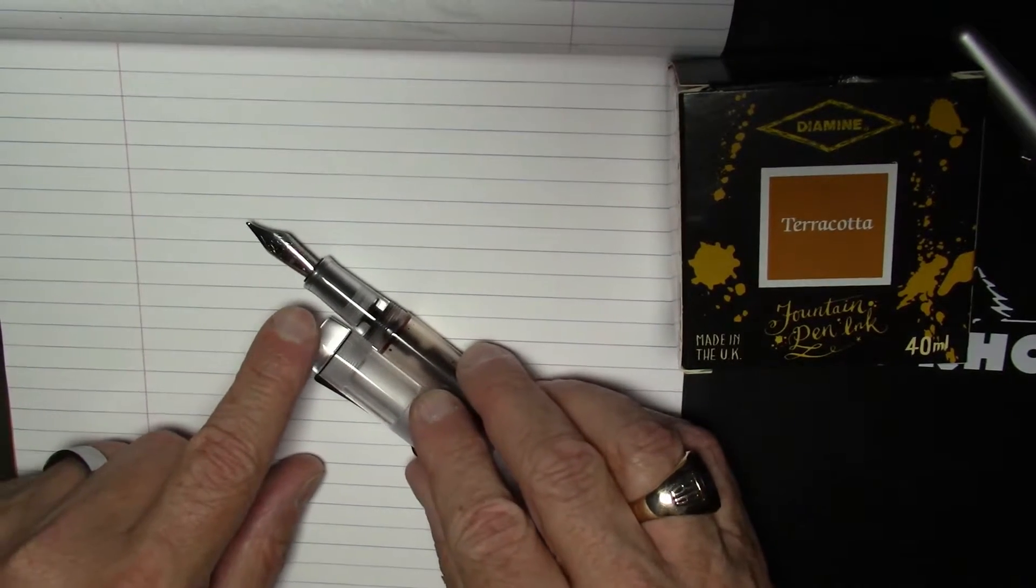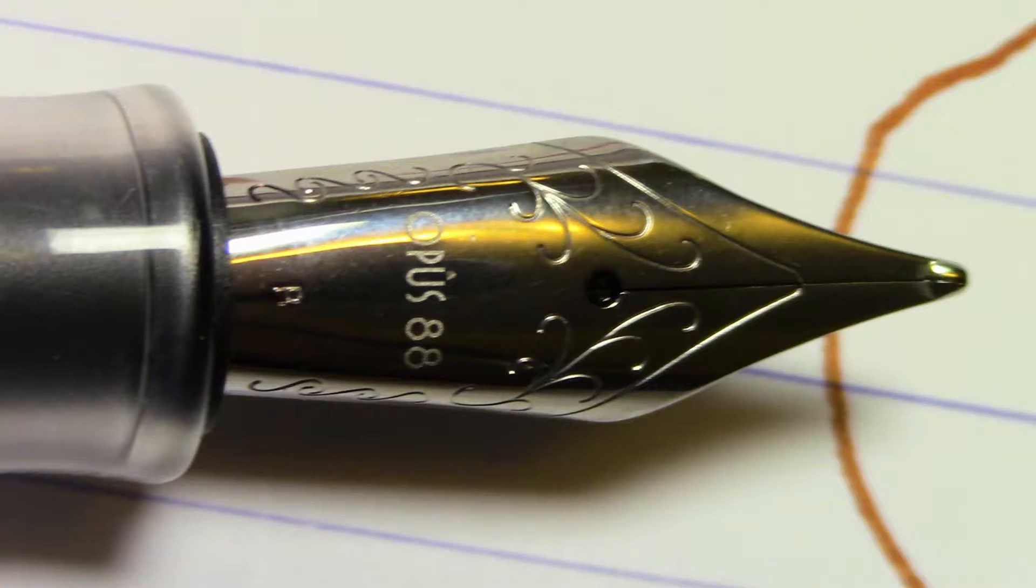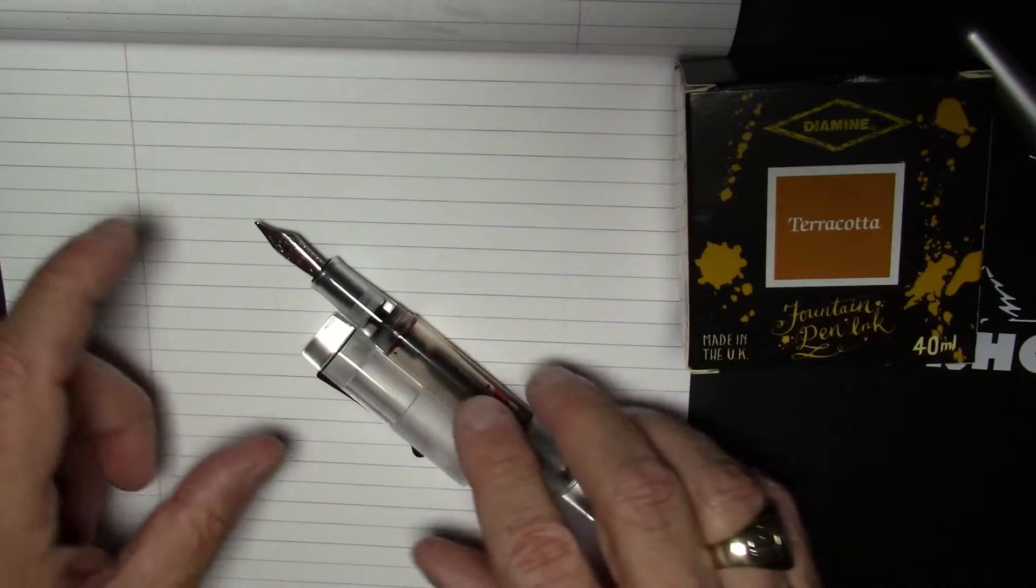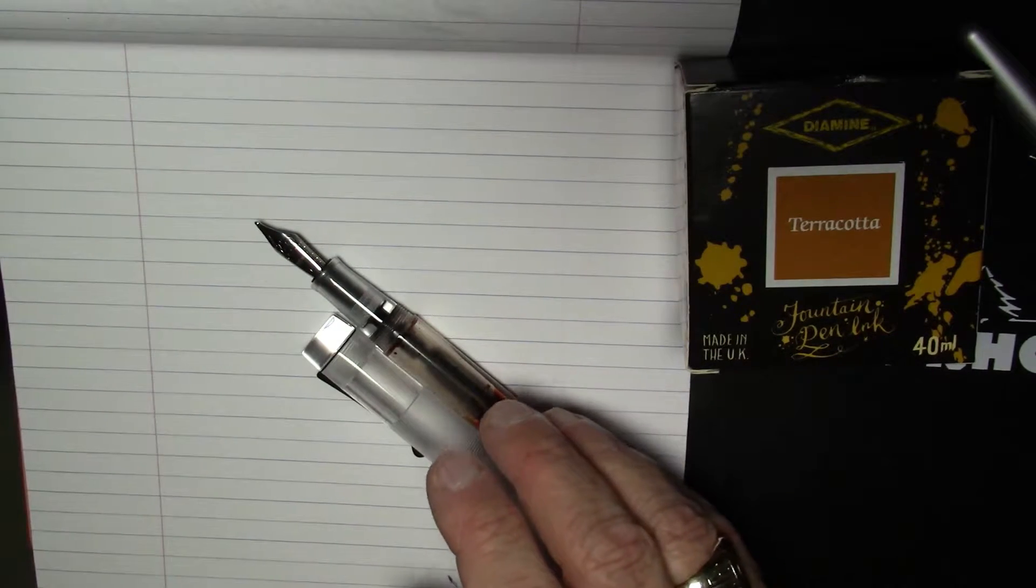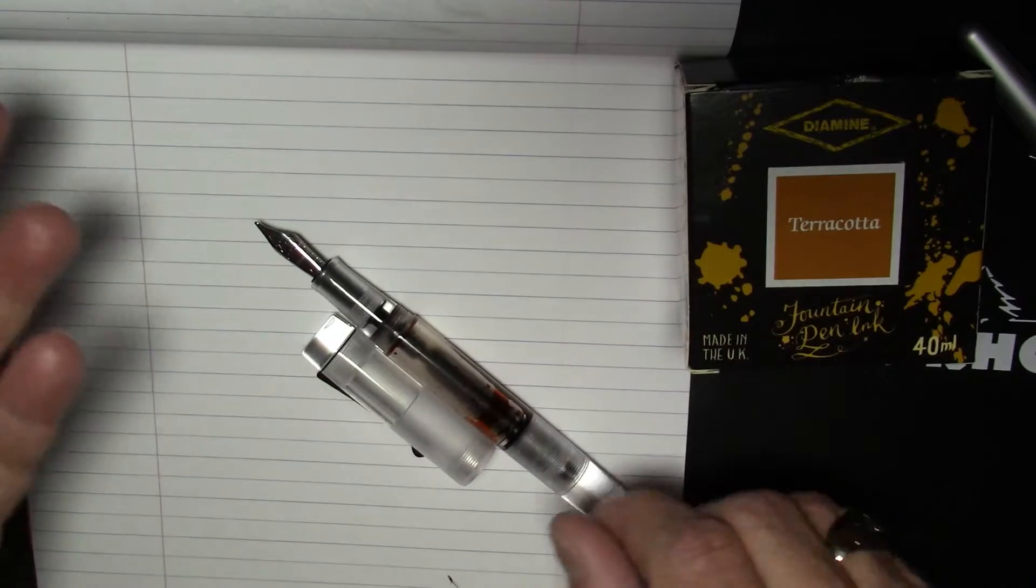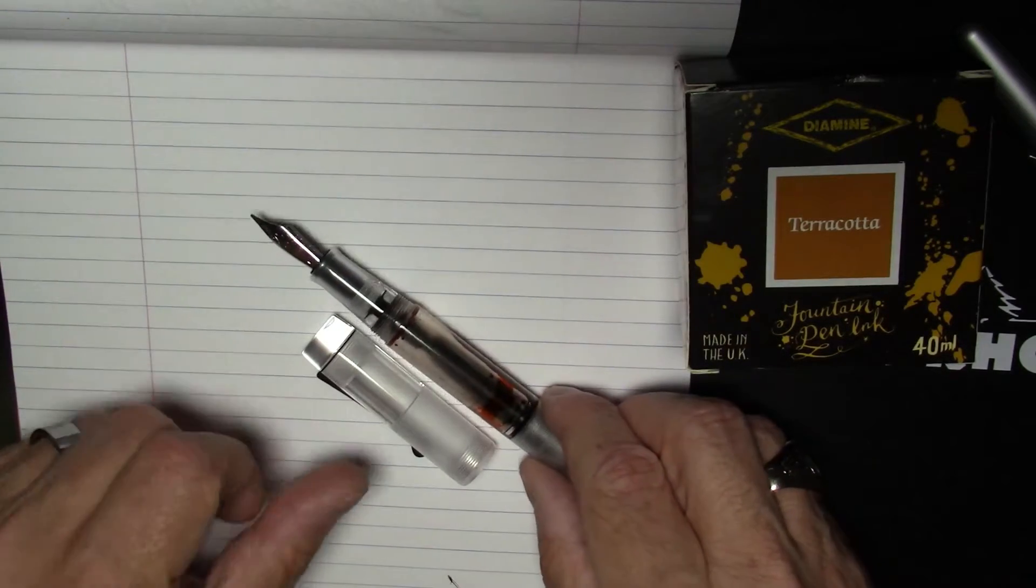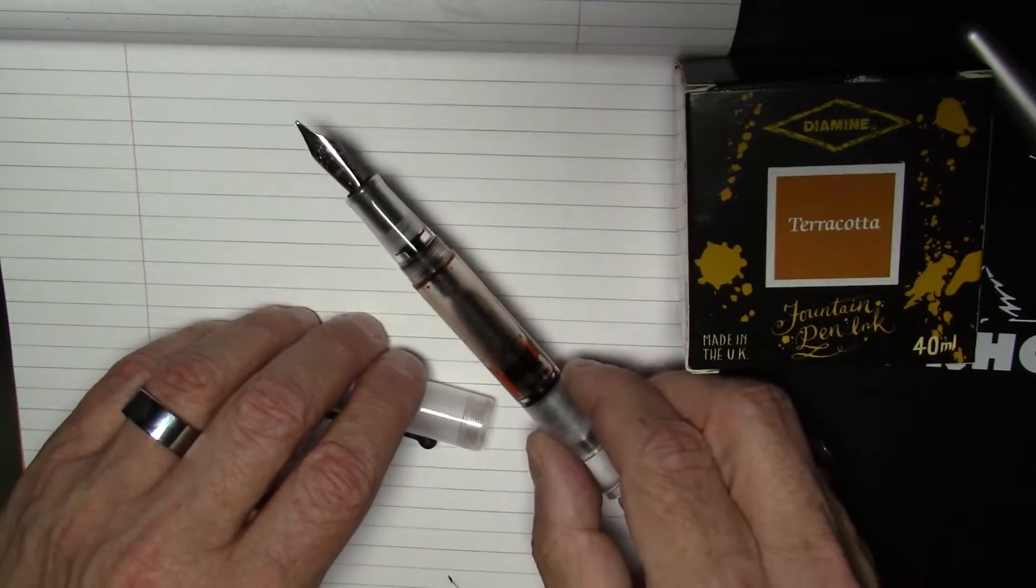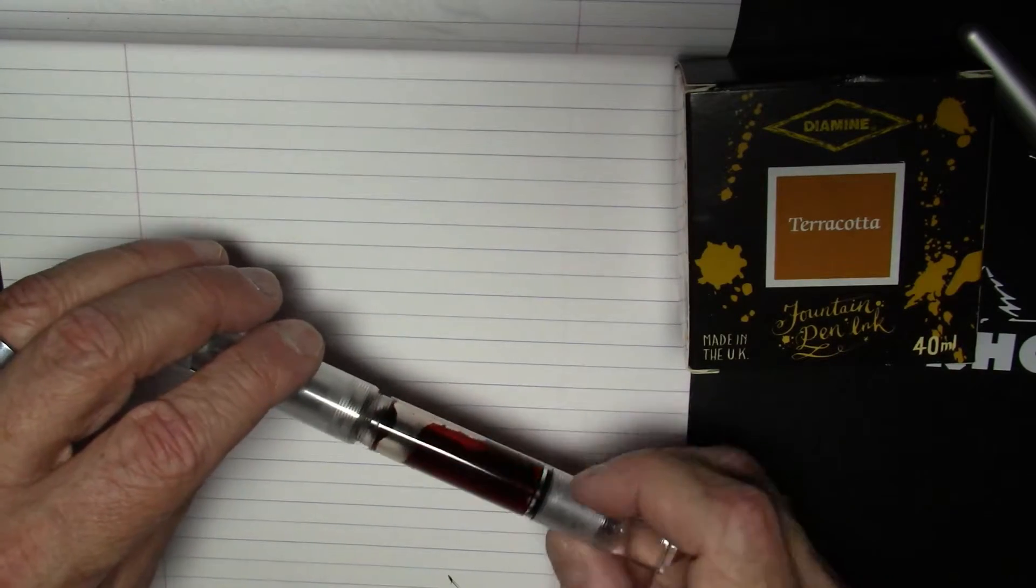This nib is a Jovo number six size nib. It has the normal sort of Jovo style scroll work. It does have Opus 88 etched on the nib and a very tiny little letter B for broad. It's a standard Jovo nib, so it's easily switched out and replaced if you ever want to switch nibs, which is also a really nice feature.